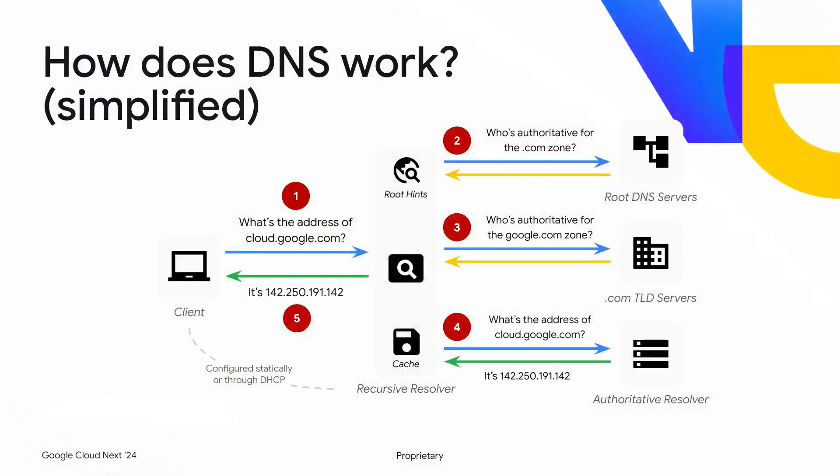How does it work? There's a client — it can be an end user or a workload running in the cloud — and that workload or user wants to talk to another service. The first thing that happens is a DNS query goes from that client to a recursive resolver. The resolver does a recursive lookup to find the IP address for the service you need to connect to.